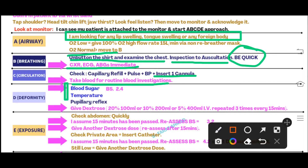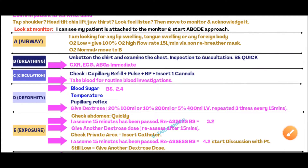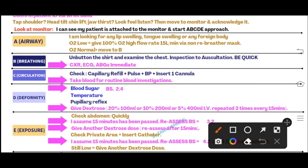For D — Disability: verbalize that you are ordering blood sugar and temperature. When you mention blood sugar, the examiner will give you a reading — for example, 2.4 or 1.8. Once the examiner gives you a reading like 2.4, it becomes clear this is a hypoglycemia station. Keep in mind: since the patient is unconscious, you must also check the pupillary reflex alongside blood pressure, blood sugar, and temperature.